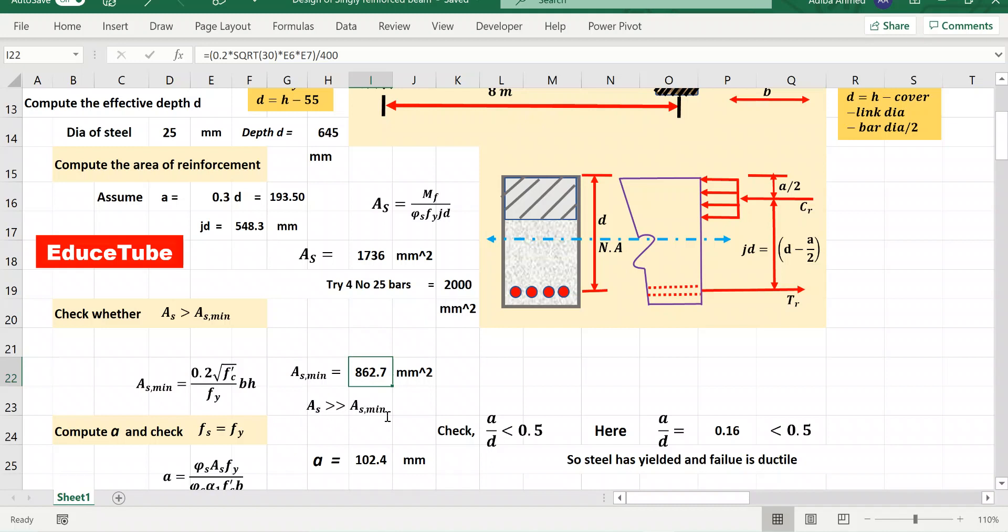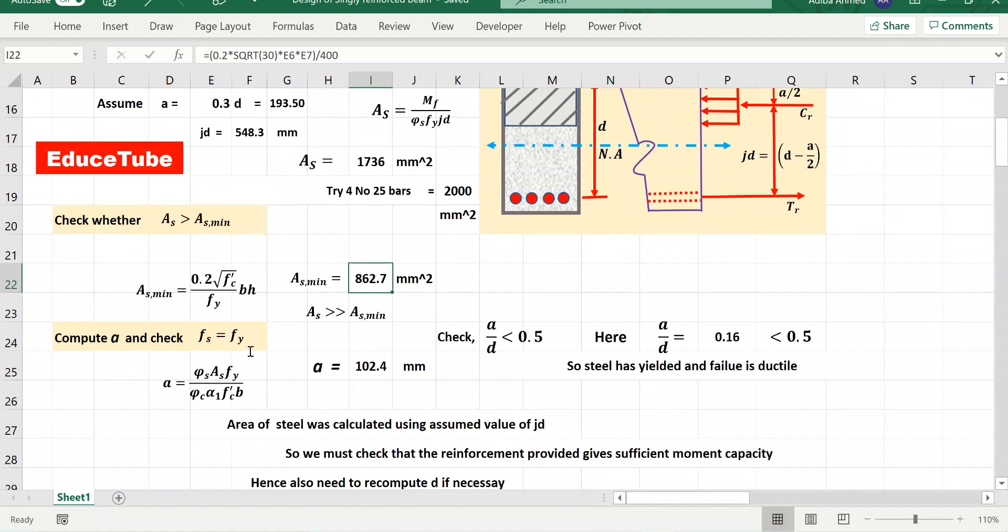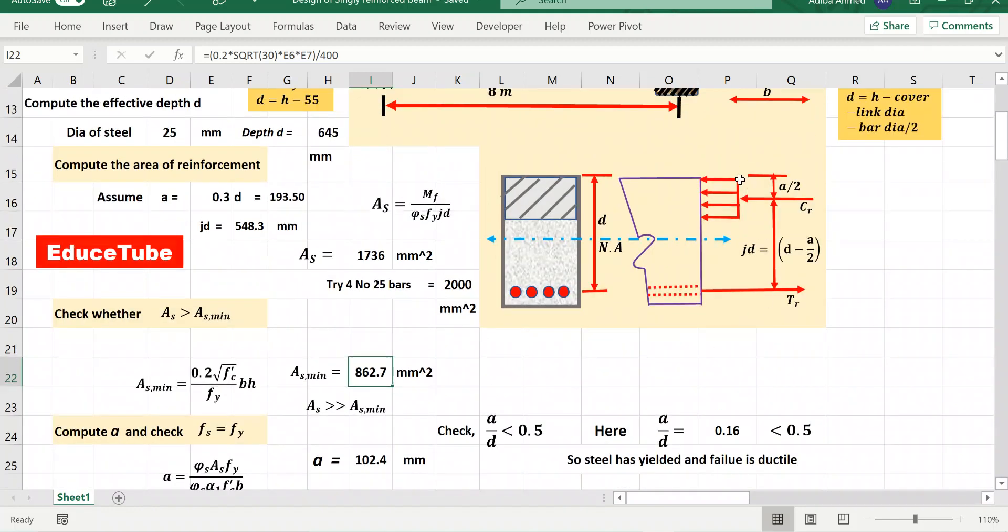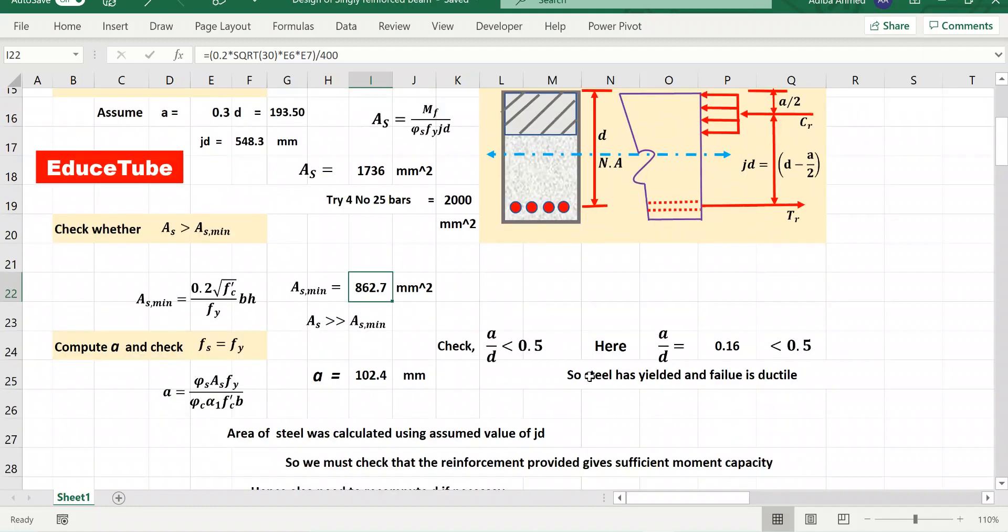Now our target is to compute a and check fs equal to fy. That is very important because fs equal to fy means failure is initiated by tension steel yielding or not, that is most important. So in this regard what we need to do, we have to check a by d. If this ratio less than 0.5, surely we can say that steel has yielded and failure is ductile.